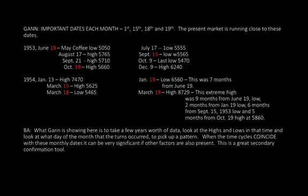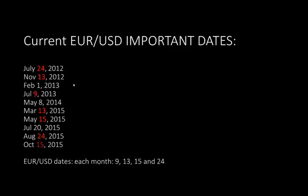Current Euro/US dollar important dates — current meaning March of 2016. I couldn't use the summer of 2014 to early 2015 because it was a pretty good down move and there aren't really good highs and lows — it was kind of trendy. Going back a little further, you'll see 24s repeat, 13s, 15s, and there's one 9 in there but an 8 real close. Euro/US dollar dates each month based on this: 9, 13, 15, and 24. You'd want to work these out for your own market.